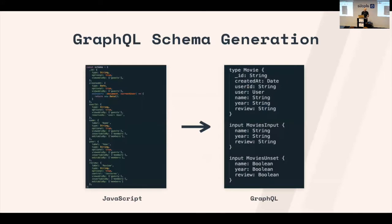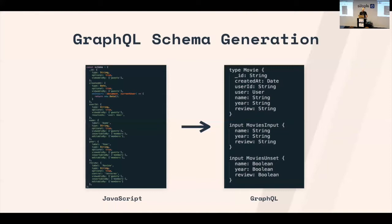Another really cool thing Vulcan does is generate your GraphQL schema for you. On the left you can see the JavaScript schema — built using SimpleSchema, a pretty standard format — and then it generates your GraphQL schema, which is used to generate your GraphQL endpoint. The reason this is useful is that you have a single source of truth: the JavaScript schema. Otherwise, if you write your GraphQL schema manually, the two might get out of sync. I was actually at a conference in Stockholm where a guy from Facebook working on GraphQL mentioned they had the same approach — generating their GraphQL types from their PHP types. That's a nice official validation that this approach makes sense.